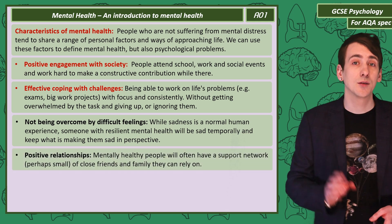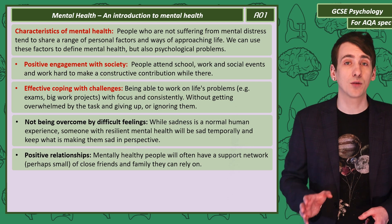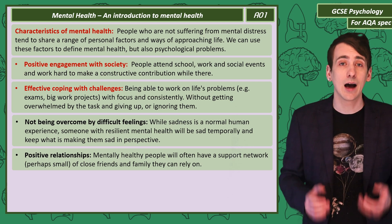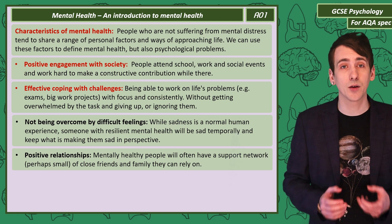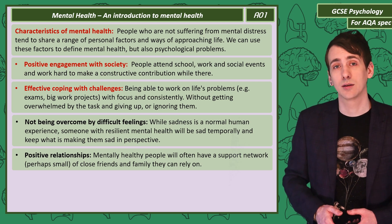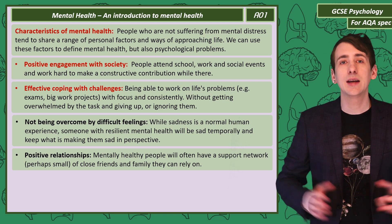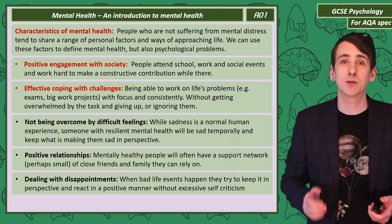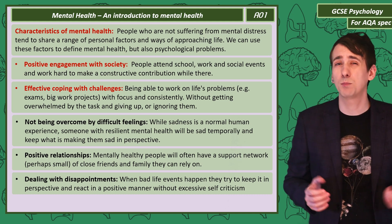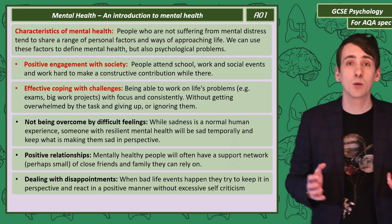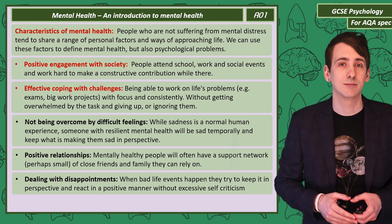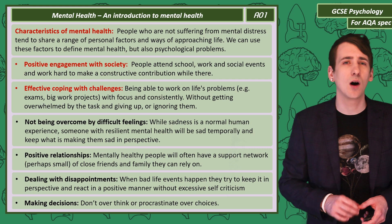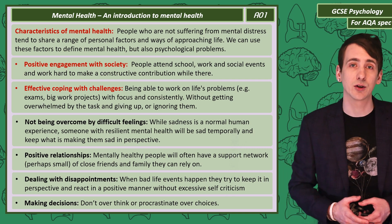Positive relationships are important. Support networks are a collection of close friends and family that you turn to when you've got a problem, and mentally healthy people will work on keeping these positive relationships going. Dealing with disappointments is another characteristic — there are bad life events that happen to all of us, and we expect mentally healthy people to react as positively as possible without excessive self-criticism. When it comes to making decisions, mentally healthy people tend not to overthink or procrastinate about their choices.